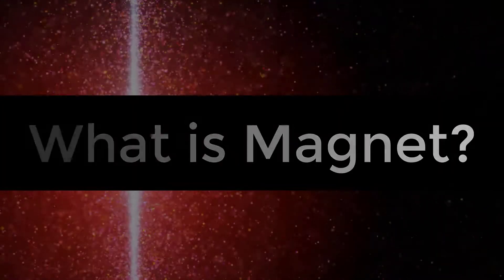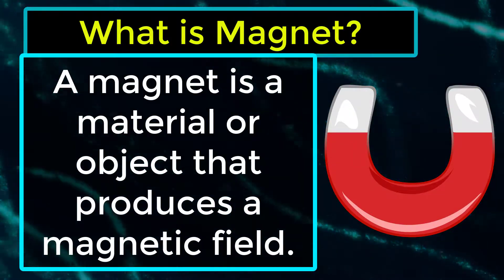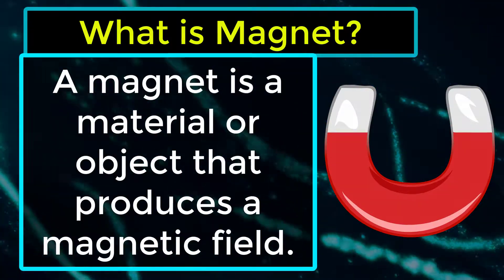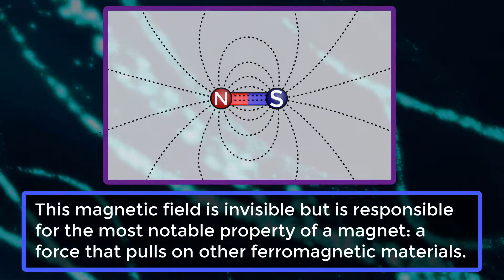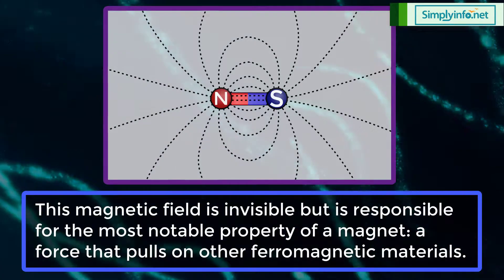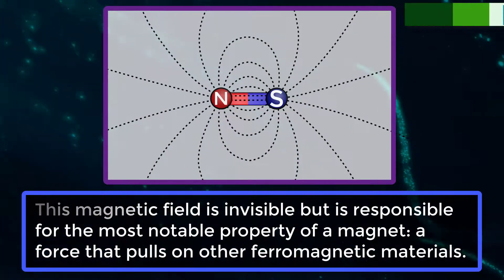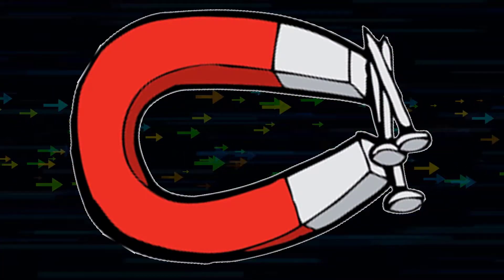What is a magnet? A magnet is a material or object that produces a magnetic field. This magnetic field is invisible but is responsible for the most notable property of a magnet, i.e., a force that pulls on other ferromagnetic materials such as iron and attracts or repels other magnets.